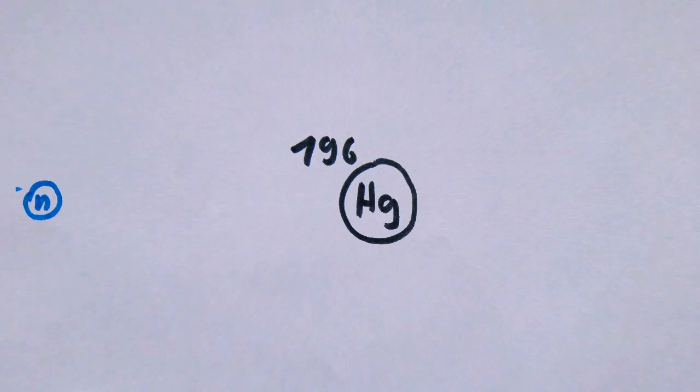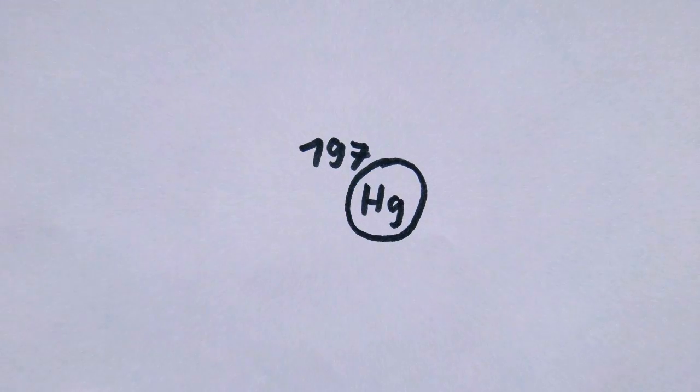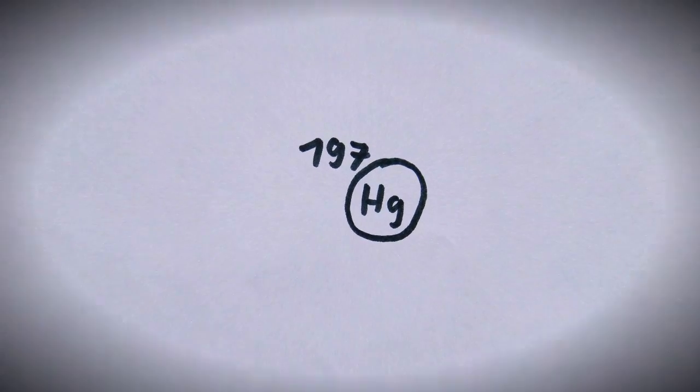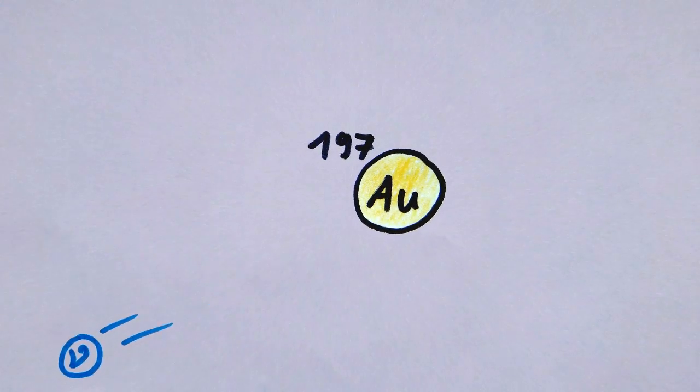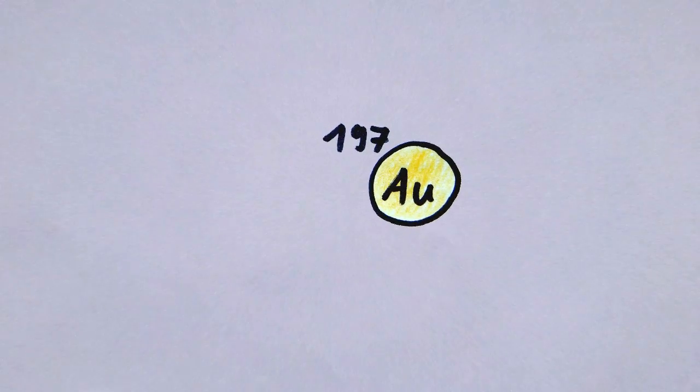Mercury-196 can capture a moderated slow neutron produced in a nuclear reactor which yields mercury-197. This mercury isotope is unstable and decays to gold-197 by an electron capture process.